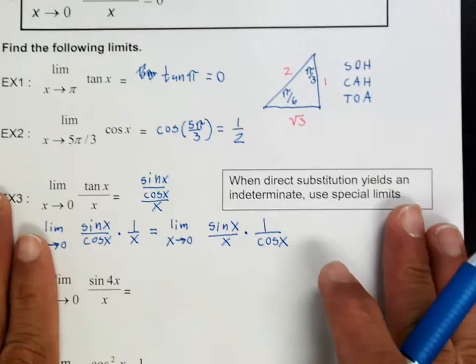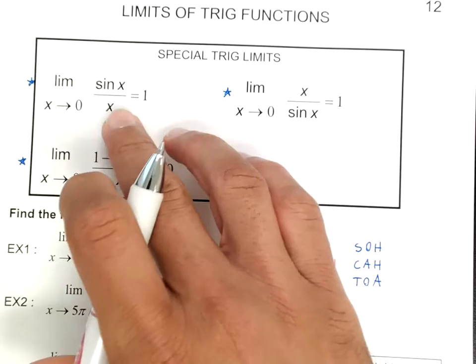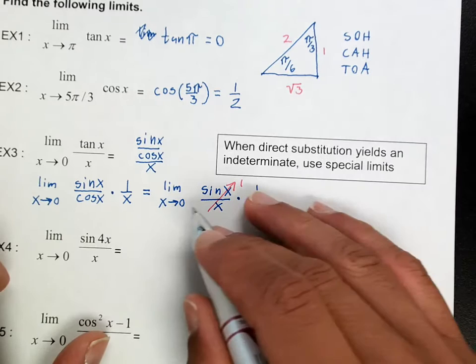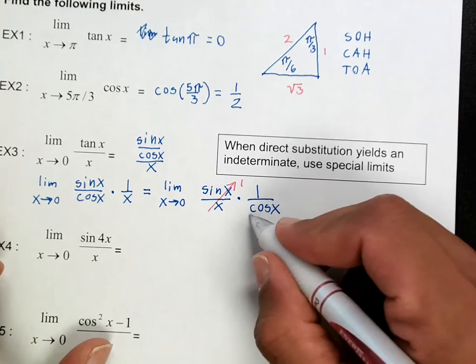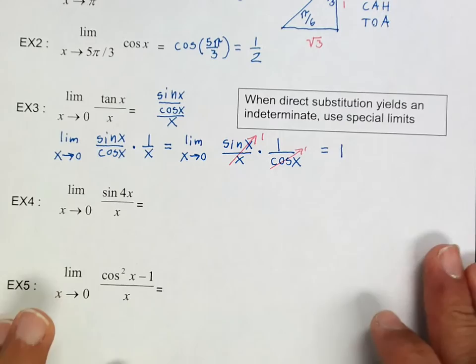So notice that this right here, sine of x over x is 1. How do I know that? Because I memorized this. The limit as x goes to 0, sine of x over x is 1. So this right here is going to be 1. And also when you plug in a 0 here, the cosine of 0 is also 1. So this is 1, that's 1. So the answer to this limit is 1.